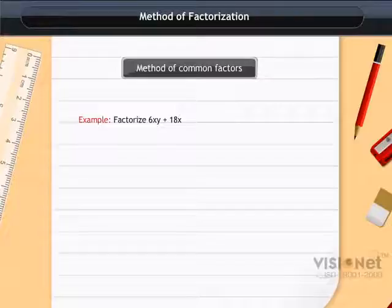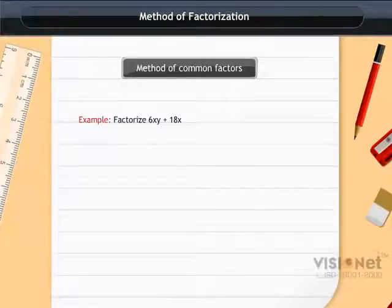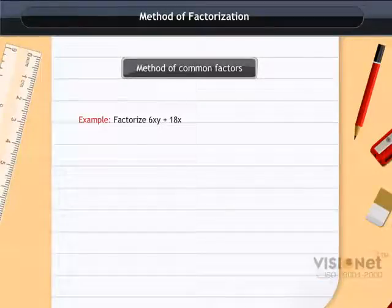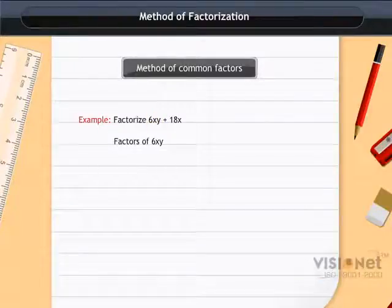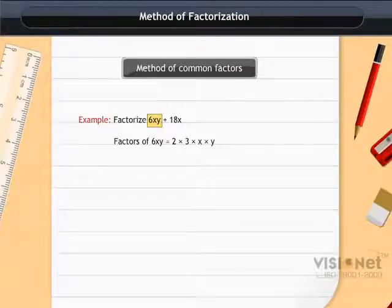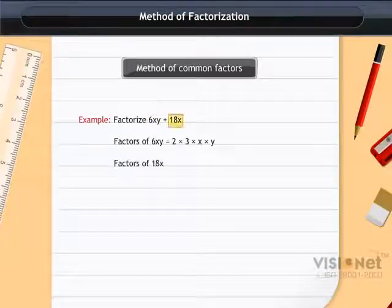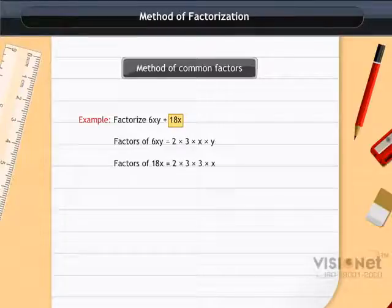6xy + 18x. We need to find the factors. Let us find out the factors of each term. The first term 6xy equals 2 × 3 × x × y. The second term 18x equals 2 × 3 × 3 × x.